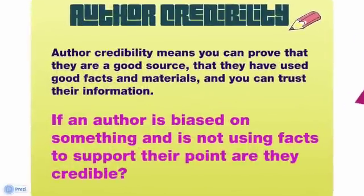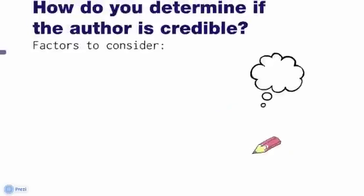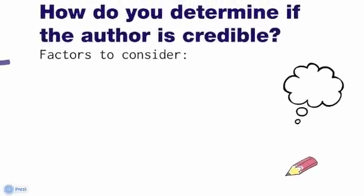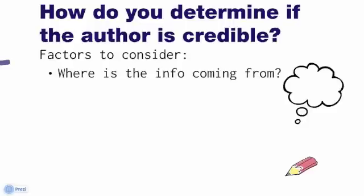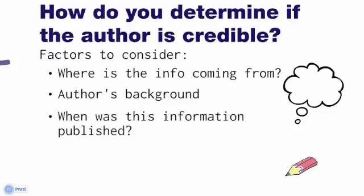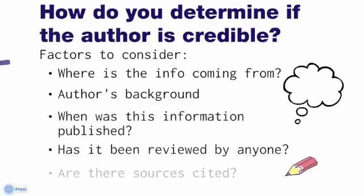Now let's move into author credibility. Author credibility means you can prove that an author is a good source — that they've used good facts and materials and you can trust their information. If an author is biased and not using facts to support their point, are they credible? Some things to consider: Where is the information coming from? What is the author's background? When was this information published? Has it been reviewed by anyone? Are there sources cited in the article? And finally, is it biased?